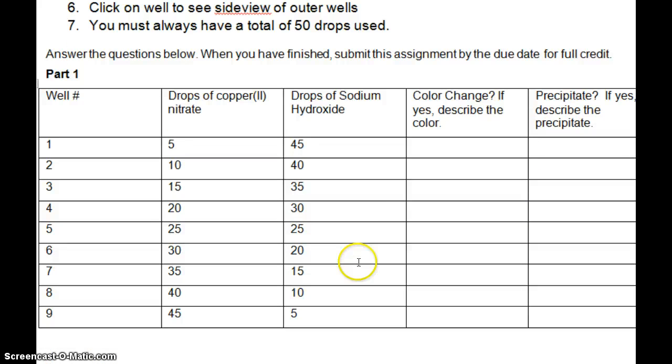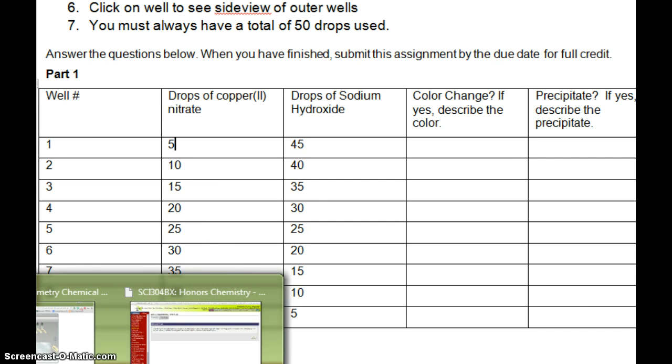So in this one, we're going to do nine reactions. And if you notice, we have two chemicals, copper 2 nitrate and sodium hydroxide. We're going to start with five drops, then ten, fifteen, twenty, twenty-five, thirty, thirty-five, forty, forty-five. And then we're going to go opposite with this one. Forty-five drops, forty drops, thirty-five, thirty, twenty-five, twenty, fifteen, ten, five. If I add up how many total drops I'm putting, forty-five plus five equals fifty. Forty plus ten equals fifty. Thirty-five plus fifteen equals fifty. Thirty plus twenty equals fifty. So as you can see, we always have the same total amount. We just have various combinations of my two chemicals.